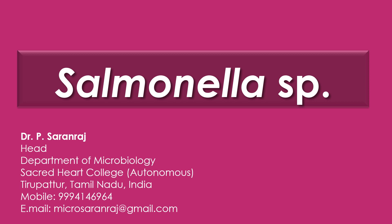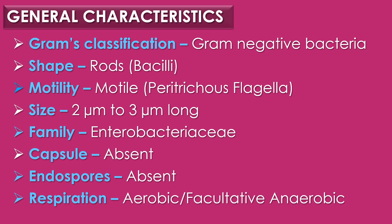In this video, we are going to see about the enteric pathogen Salmonella species. Regarding general characteristics, Salmonella species is classified as gram-negative rod-shaped bacilli and is motile in nature due to the presence of peritrichous flagella. The size of the Salmonella species is 2 to 3 micrometers long and it belongs to the family Enterobacteriaceae. Capsules and endospores are absent.